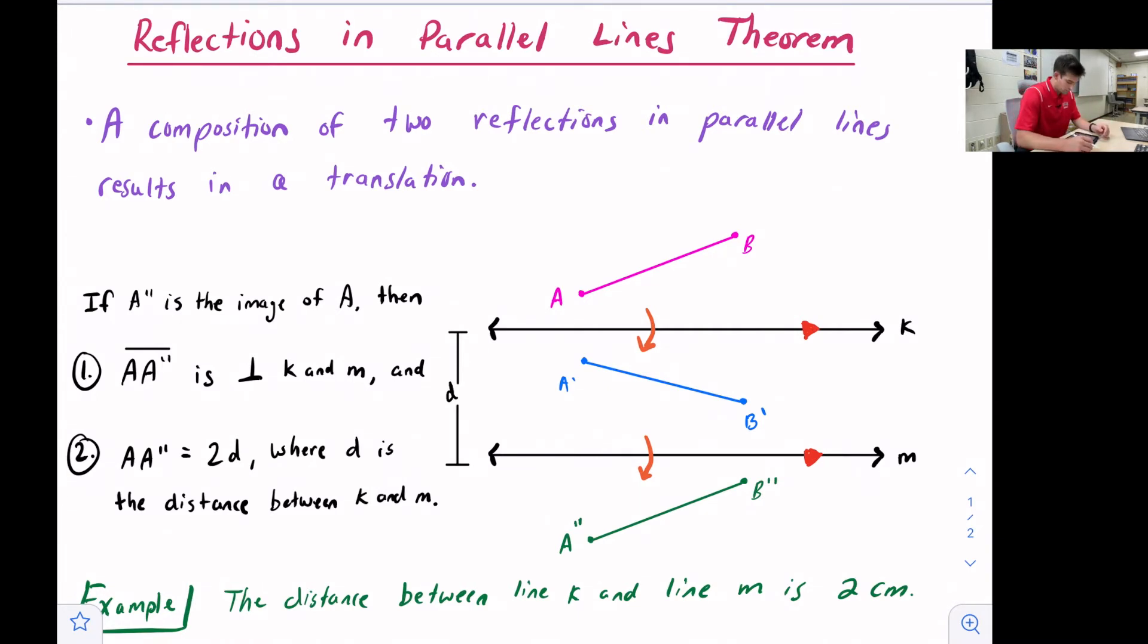So we have a little diagram that we can look at and then we're going to do one example together. It says if A double prime, so we're talking about this point right here, if A double prime is the image of point A, then there's a couple things that are true.